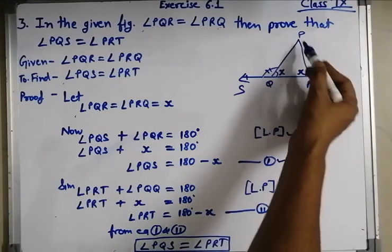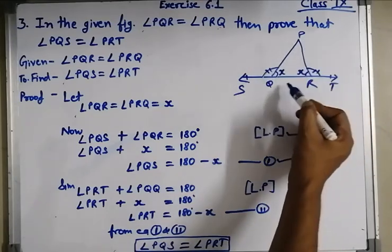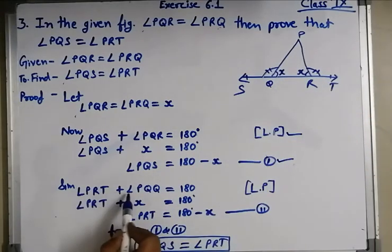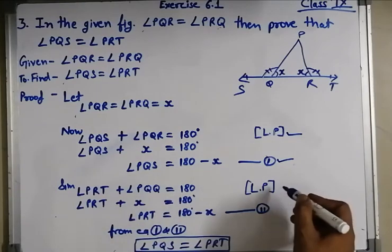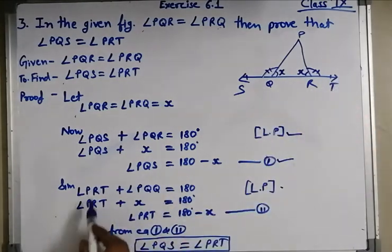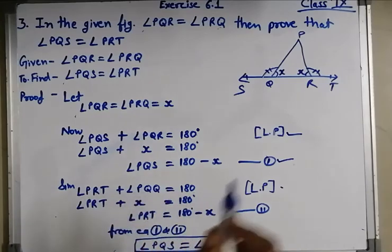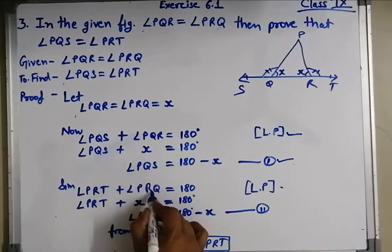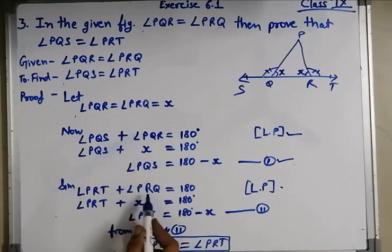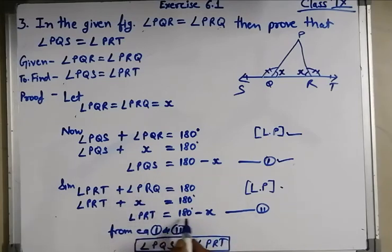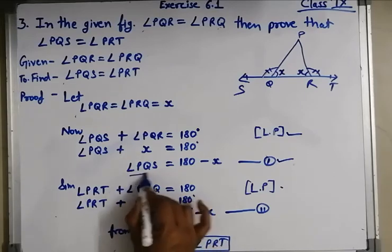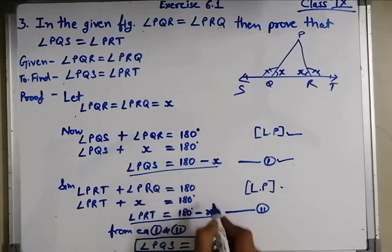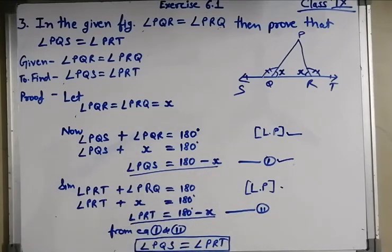Similarly on this side: angle PRT and PRQ. PRT plus angle PRQ is equal to 180, linear pair, because it is a straight line. PRQ is equal to x, so transposing: angle PRT is equal to 180 minus x. This is equation number 2. Now from both equations we get angle PRT is equal to PQS. Hence proved.